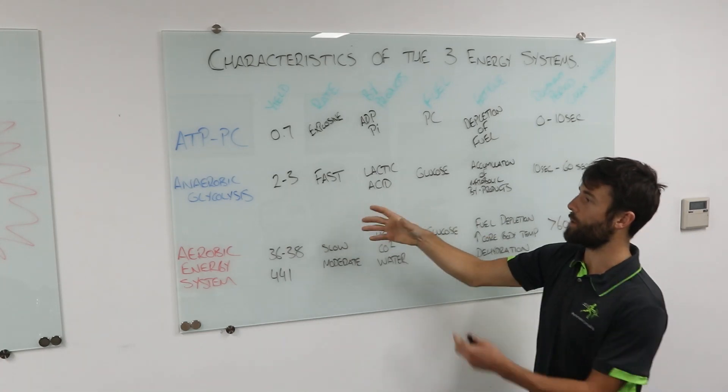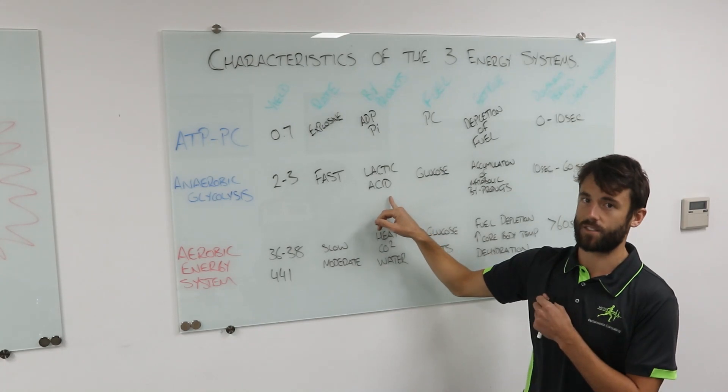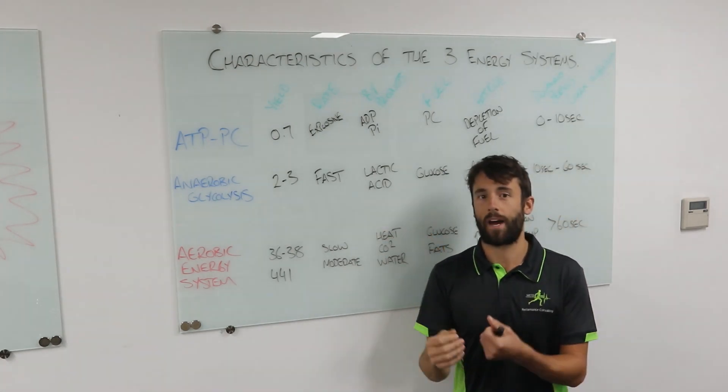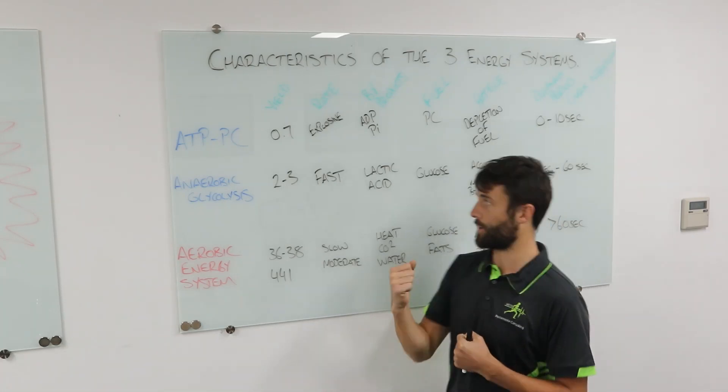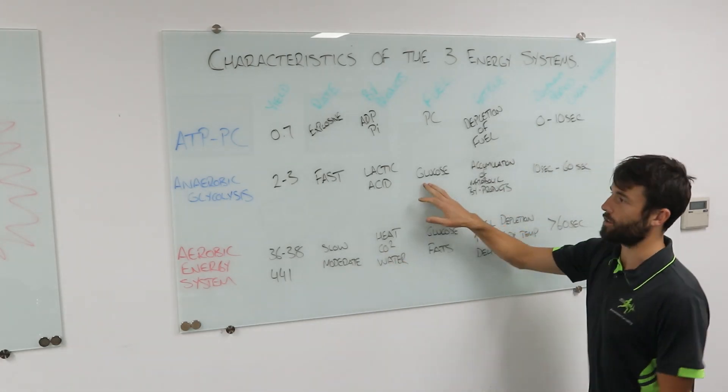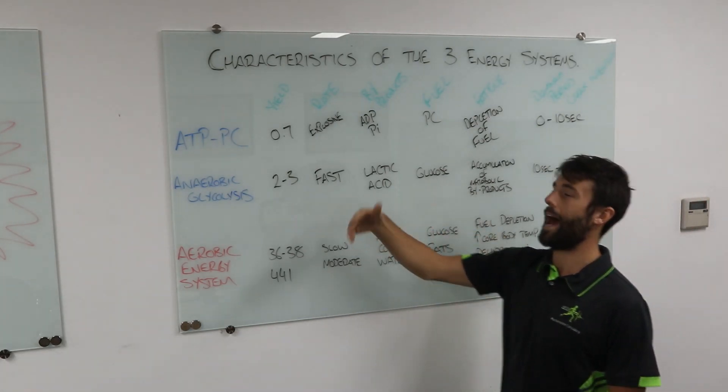The problem here is that when we break down glycogen without oxygen present, we get lactic acid as a byproduct. Lactic acid being made up of lactate and hydrogen ions, and those hydrogen ions are going to cause fatigue, which we'll talk about later on in the term. The fuel is glucose or glycogen. So we have stored glucose or glycogen, we break it down anaerobically.